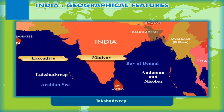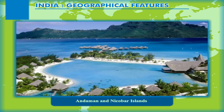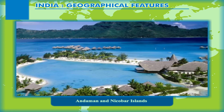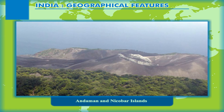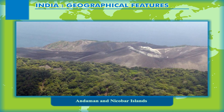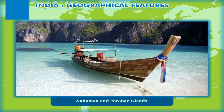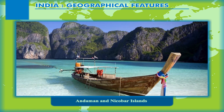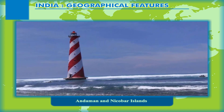Lakadive, Minikoy, and Amindivi form the Lakshadweep Islands. The arc of islands in the Bay of Bengal is formed by the North, Middle, and South Andaman and Nicobar Islands, which are supposed to be part of an extended fold mountain chain submerged underwater; some are also volcanic in origin. The only active volcano in India is located on Barren Island, which belongs to this group. The Andaman and Nicobar islands are bigger than those of Lakshadweep, and Indira Point, the southernmost point of India, lies in these islands.